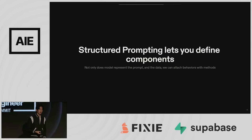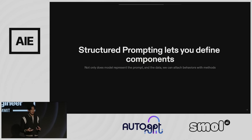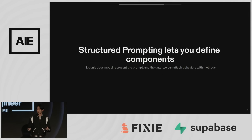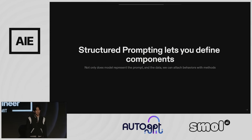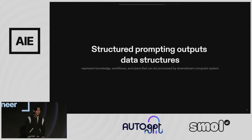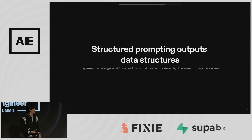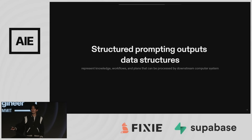Structured prompting gives you really useful components you can reuse and make modular. The idea is to model the prompt, the data, and the behavior together — almost like going from C to C++, where what you gain is object-oriented programming. If we do this right, we're going to get a lot more productive development out of language models. These models can now output actual data structures — you can traverse graphs, process data in useful ways, and represent knowledge, workflows, and plans you can dispatch to classical computer systems.